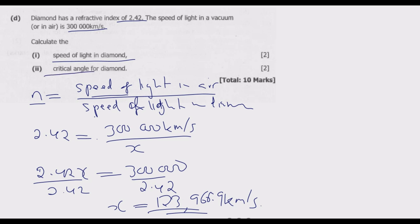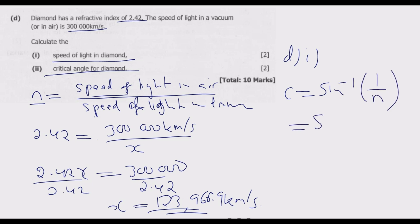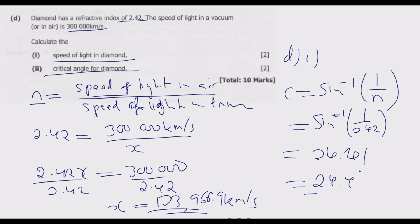Then we calculate the critical angle of diamond. Similarly to question B, the critical angle is given by inverse sine of 1 over the refractive index. So it will be inverse sine of 1 over 2.42. Using our calculator, we find 24.41 degrees, simplified to 24.4 degrees as the critical angle of diamond. This is how you answer this question to get the 10 marks.